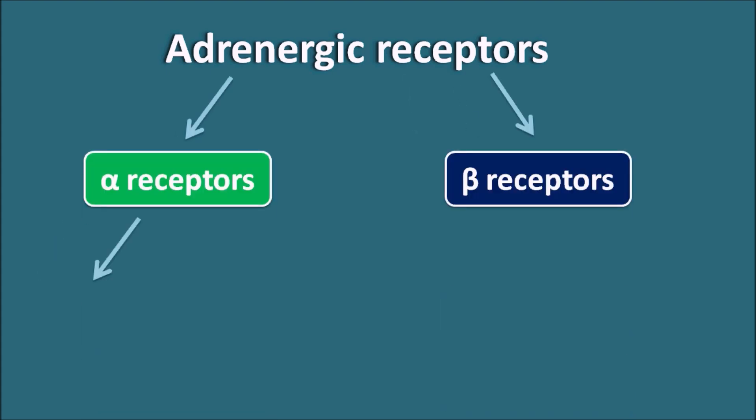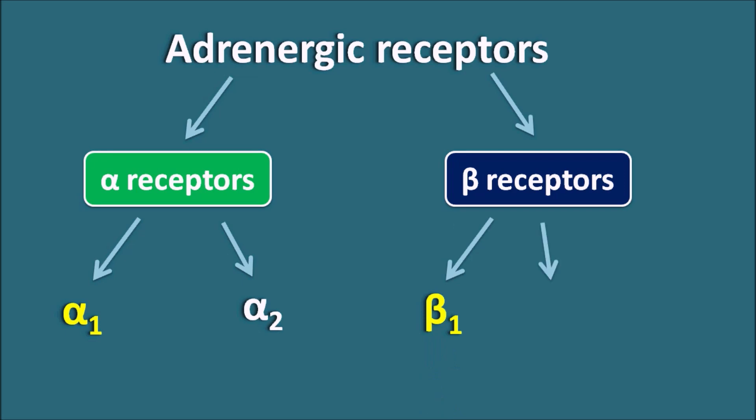Alpha receptors are further classified as alpha-1 and alpha-2 receptors, whereas beta receptors are classified into three types: beta-1, beta-2, and beta-3 receptors.